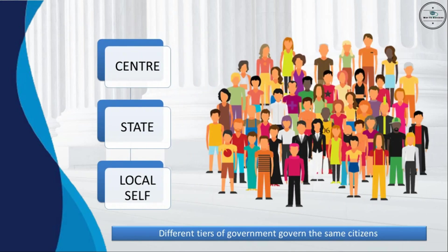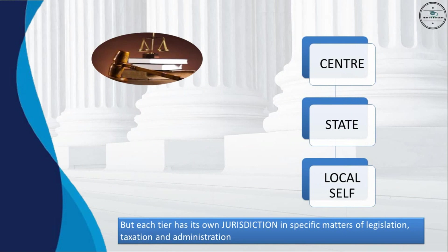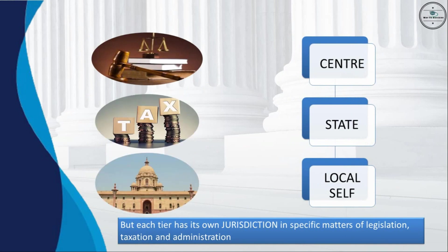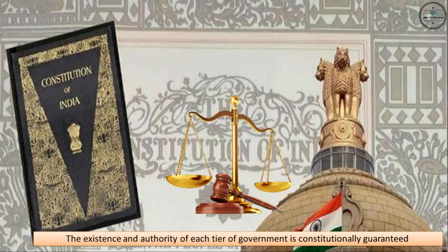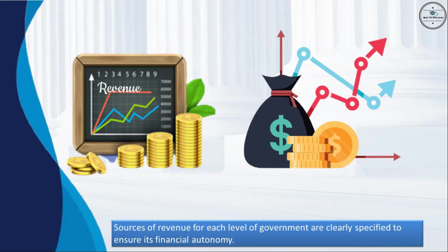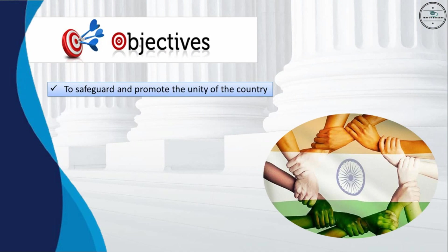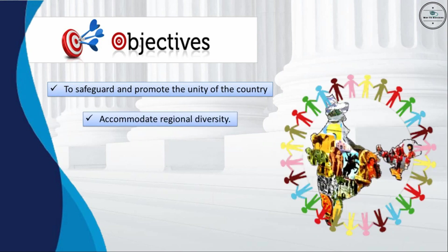Key features of federalism: there are two or more different levels of government. Different tiers of government govern the same citizens, but each tier has its own jurisdiction in specific matters of legislation, taxation, and administration. The existence and authority of each tier is constitutionally guaranteed, and courts have the power to interpret the constitution. Sources of revenue for each level are clearly specified to ensure financial autonomy. The federal system has dual objectives: first, to safeguard and promote the unity of the country; second, to accommodate regional diversity.